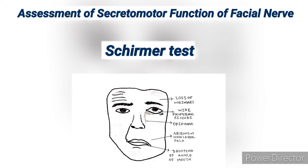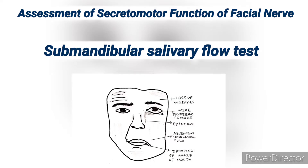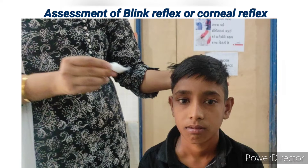For assessment of salivation, the submandibular salivary flow test can be performed as a topodiagnostic test. We should also perform the corneal reflex, as the afferent of the corneal reflex is the trigeminal nerve and the efferent is the facial nerve. If the child has facial nerve palsy, the blink response will not occur on the affected side.